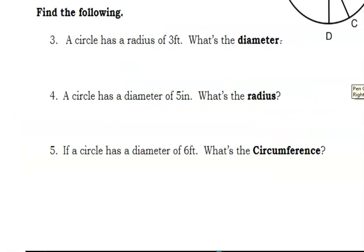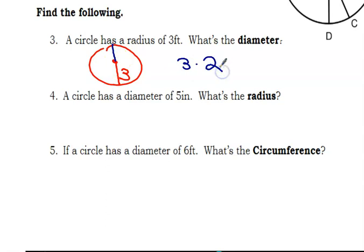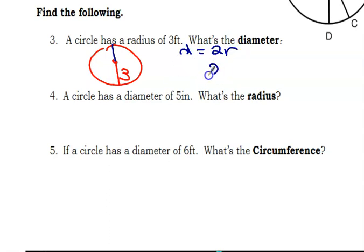If a circle has a radius of three, what is the diameter? If the radius is three, I need to double that to find the diameter — diameter equals 2r. So two times three equals six. Six feet.